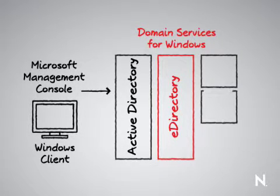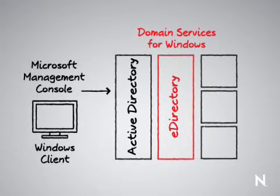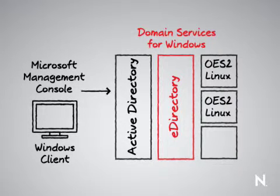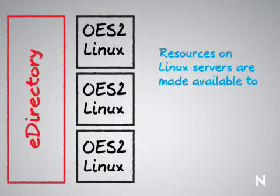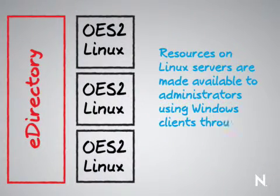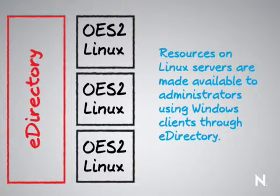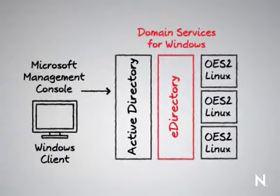If it's an OES2 Linux server — OES2 here — and multiple servers out here, these have resources that are made available and presented through eDirectory, regulated alongside Active Directory, so that when a Windows client wants to access a resource, they do so through Active Directory and gain access to that resource.